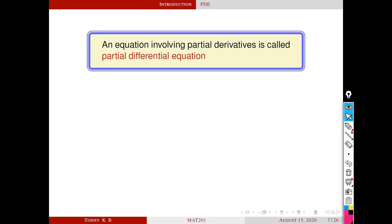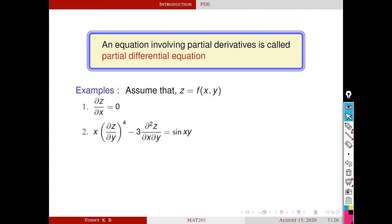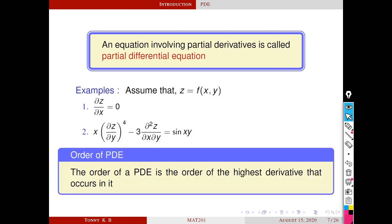An equation involving a partial derivative is called a partial differential equation. For example, ∂z/∂x = 0, where we assume z is a function of x and y. Another example is x·(∂z/∂y)⁴ − 3·(∂²z/∂x∂y) = sin(xy). The order of a PDE is the order of the highest derivative that occurs in it. The first example has only one derivative which is first order, so its order is 1. The second example involves a second order derivative, so its order is 2.